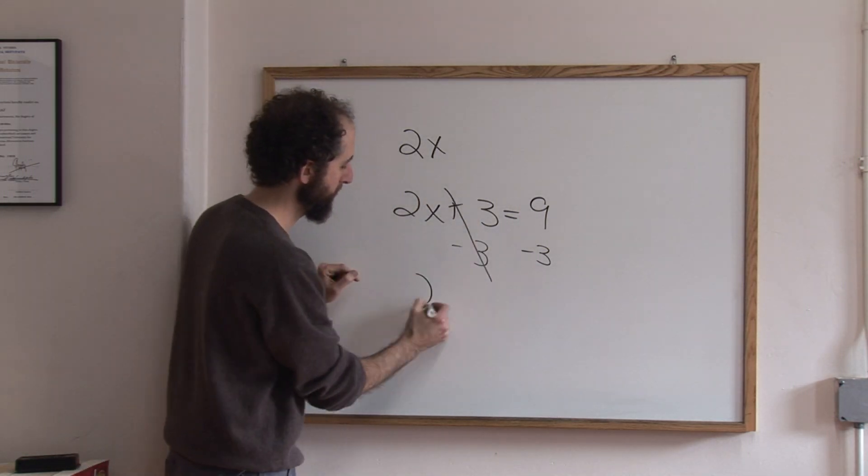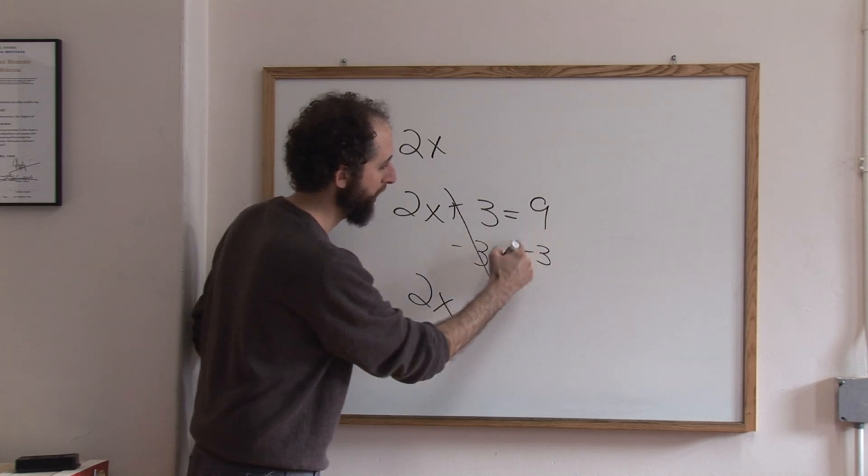So we're going to subtract three from both sides. That cancels - that's why we did it. Nine minus three is six.